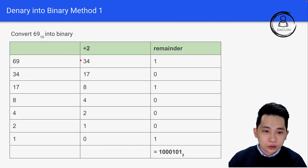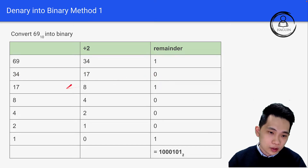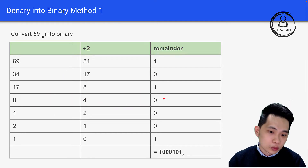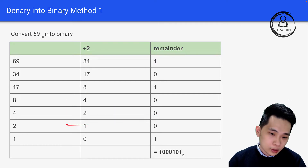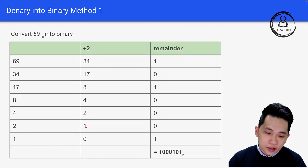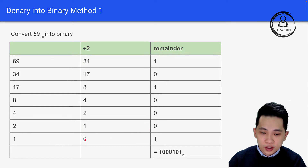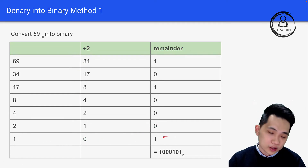Move to the next row: 34 divided by 2 gives 17 with remainder 0. 17 divided by 2 gives 8 with remainder 1. 8 divided by 2 gives 4 with remainder 0. 4 divided by 2 gives 2 with remainder 0. 2 divided by 2 gives 1 with remainder 0. 1 divided by 2 gives 0 with remainder 1.